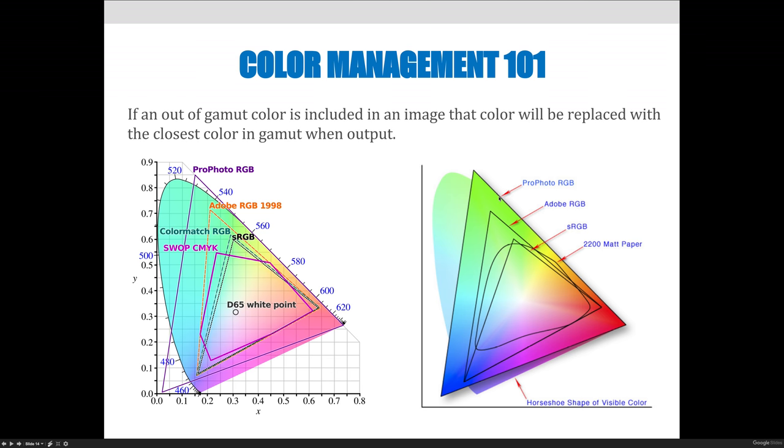That biggest one on the outside is ProPhoto RGB. The next one on the inside is Adobe RGB. It's on the inside here and it's the one that I would like you to use for all of your images in our class. If you switch to sRGB you can see that it's even smaller. All of these are RGB color modes so far and they'll produce certain colors.